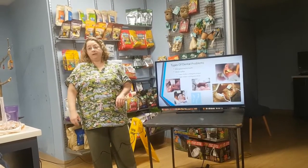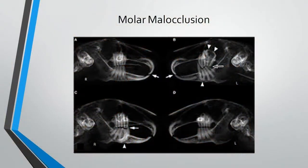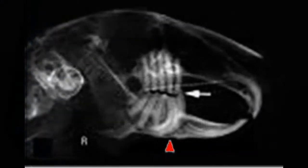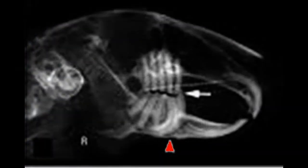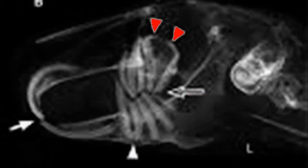Those rabbits with severe spikes — those teeth need to be trimmed like every two to four weeks. Here we're looking at some molar malocclusion. Here's one really long one going down this way, and there might even be an abscess down here. Then we have a first molar here growing up. Here it actually looks like an abscess pushing the molar roots apart, and again you can see how it affects the incisors.